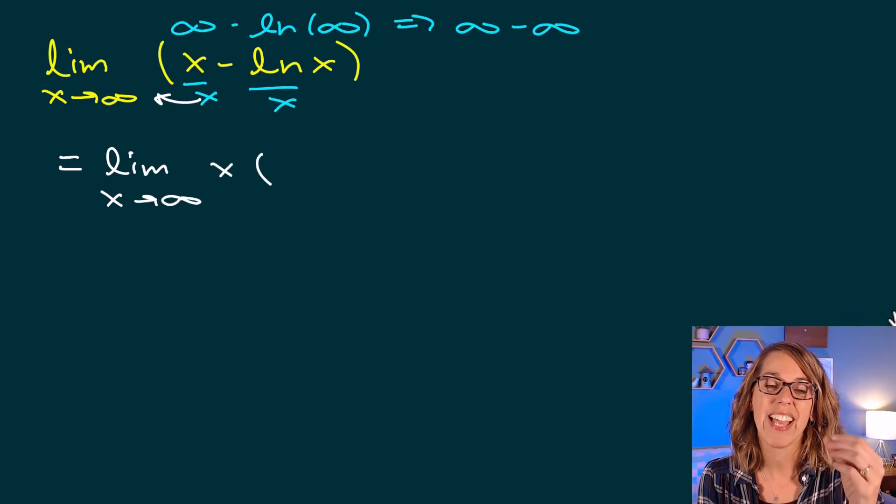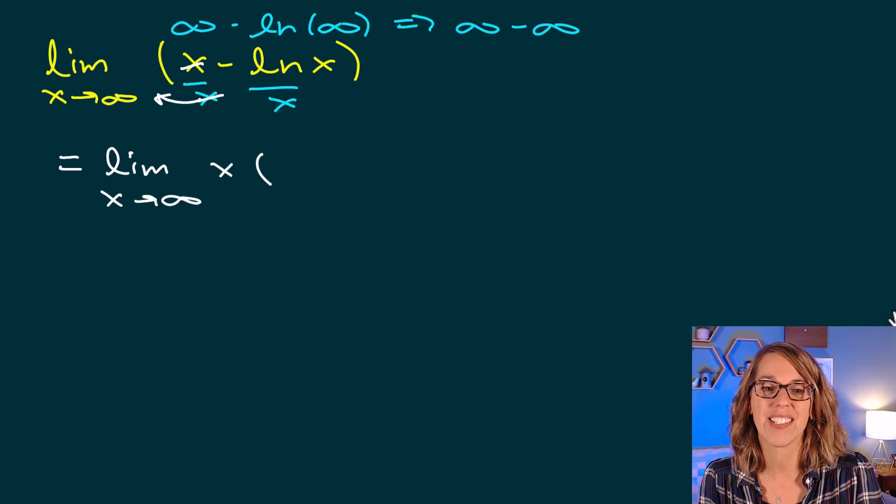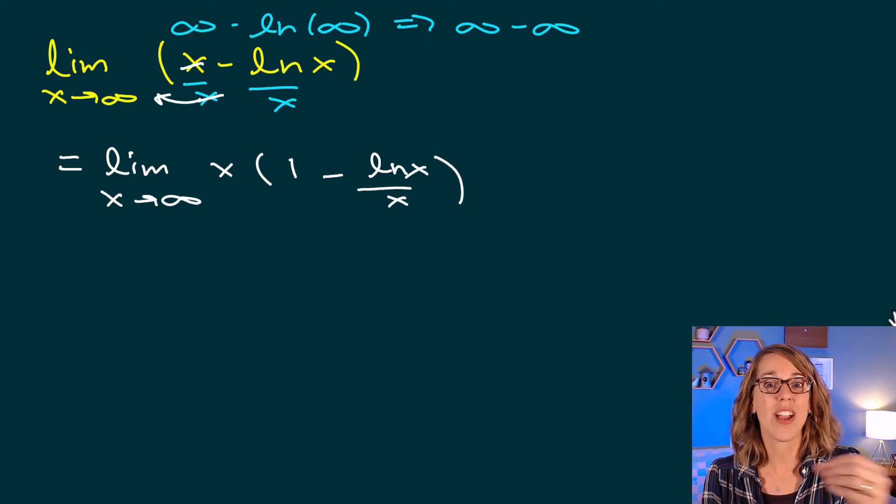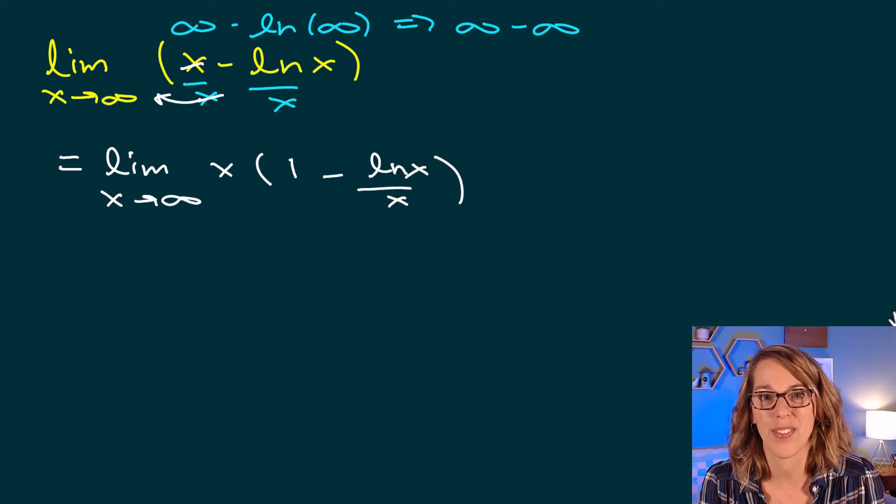So my x comes out in front. x divided by x, those cancel, and I get 1. The natural log of x divided by x can be just rewritten as the natural log of x divided by x. To make sure you've factored correctly, you can just multiply that back through.